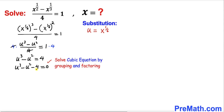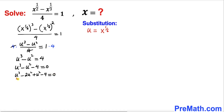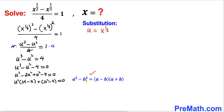We are going to solve this cubic by grouping and factoring. We rewrite negative u^2 as negative 2u^2 plus u^2, giving us u^3 minus 2u^2 plus u^2 minus 4 equals 0. The first two terms share a common u^2, so factoring that out gives u^2(u minus 2). We then recognize u^2 minus 4 as a difference of squares, recalling the identity a^2 minus b^2 equals (a minus b)(a plus b).